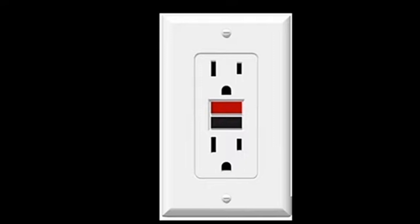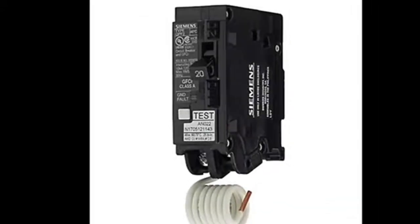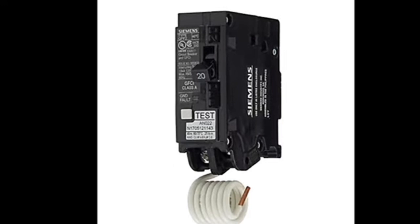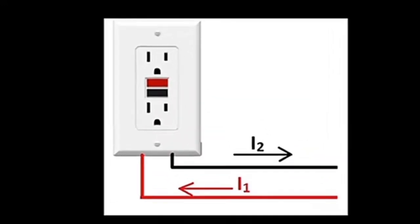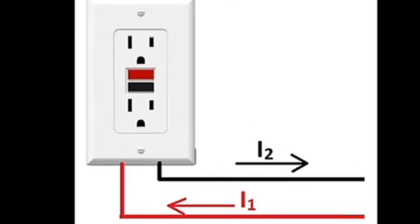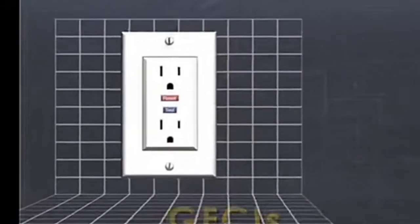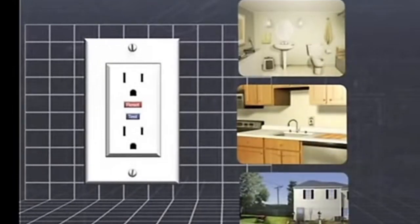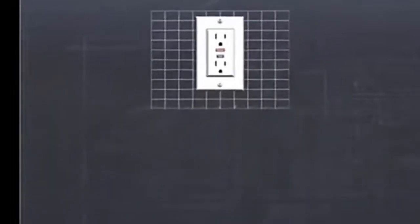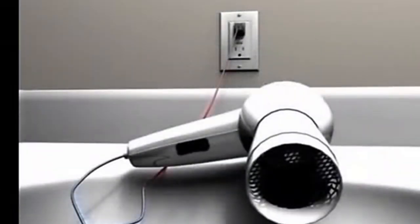Ang GFCI o Ground Fault Circuit Interruptor naman ay isang klase ng saksakan o outlet na pumputol sa electrical connection sa loob ng 1/30th of a second. Meron din itong anyo na tinatawag na GFCI circuit breaker na ginagamit sa jacuzzi at swimming pool. Kung ang circuit breaker ay nagre-react base sa init, ang GFCI naman ay nagre-react base sa balanse ng kuryente sa dalawang linya nito. Kung mas mataas ang kuryente sa hot wire kaysa sa neutral wire, malamang ilan sa mga kuryente ay umanggoy sa ibang daanan na maaaring makadisgrasysa sa mga tao sa paligid, lalong-lalo na kung may tubig na isang conductor ng electricity. Kapag walang balanse, otomatikong matatapos ang koneksyon sa kuryente.